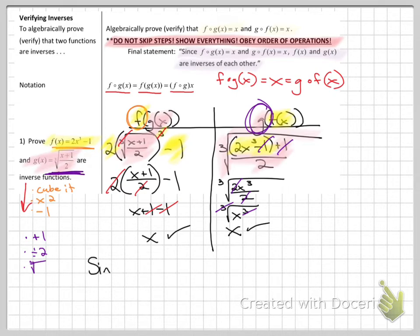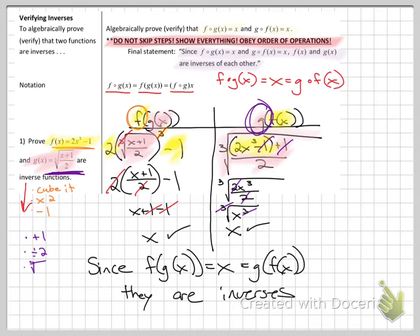And then you write your sentence. My sentence is since f of, I use the parentheses personally, but you can use the of symbol. f of g of x equals x, which is also what f of g of x equals. They are inverses. Okay, this one matches an integrated three level. There was one x in each equation. f of x had a single x in the equation and g of x has a single x in the equation. Let's look at our next example.